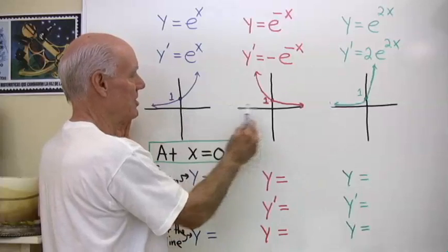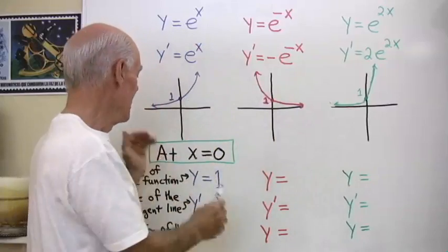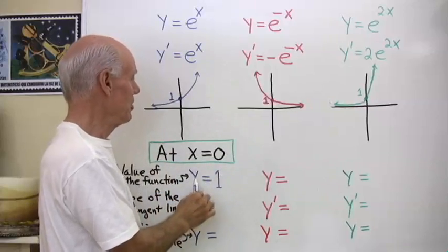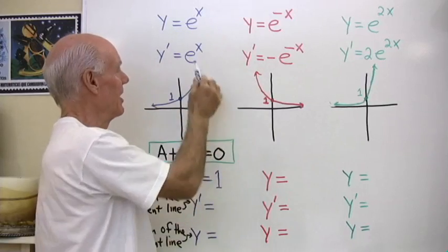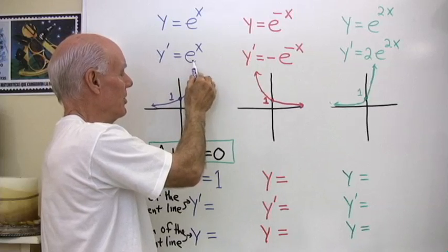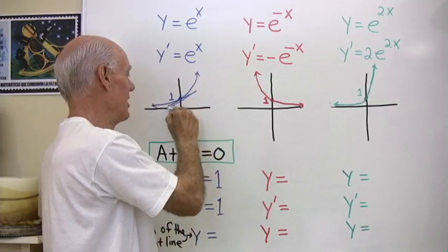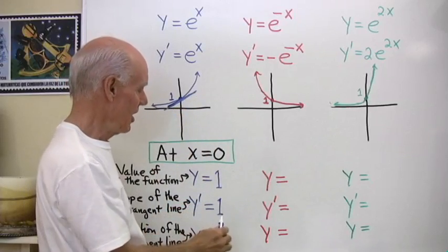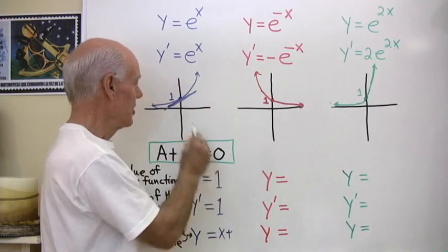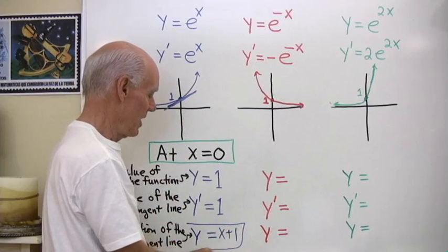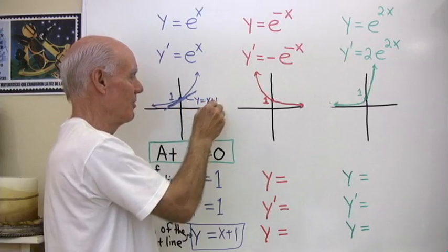Let's look at what happens when x is equal to 0 for each of these functions, their derivatives, and graphs. When x equals 0, the value of the function y equals e to the x gives y equals e to the 0, which is 1. The derivative y' equals e to the x is also 1 at x equals 0 — that's the slope of the tangent line. The equation of the tangent line is y equals 1 times x plus y-intercept 1, so y equals x plus 1.